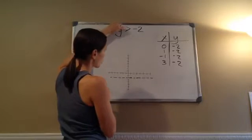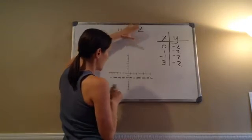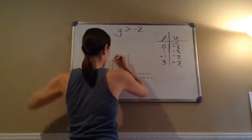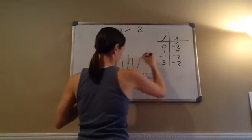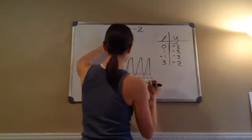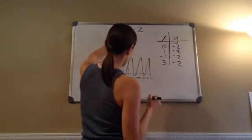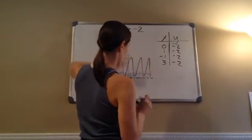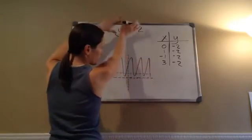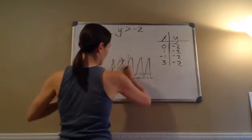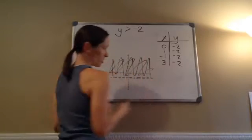And it is greater than negative 2. So the shaded part is greater than negative 2 — that's what you would shade.